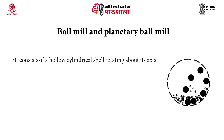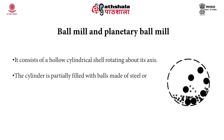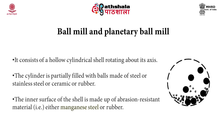A ball mill consists of a hollow cylindrical shell which rotates about its axis — the rotation can be horizontal or tilted at an angle. The cylinder is partially filled with balls made of steel, stainless steel, ceramic, or rubber. The inner wall of the shell is made of abrasion resistant material such as manganese steel or rubber.